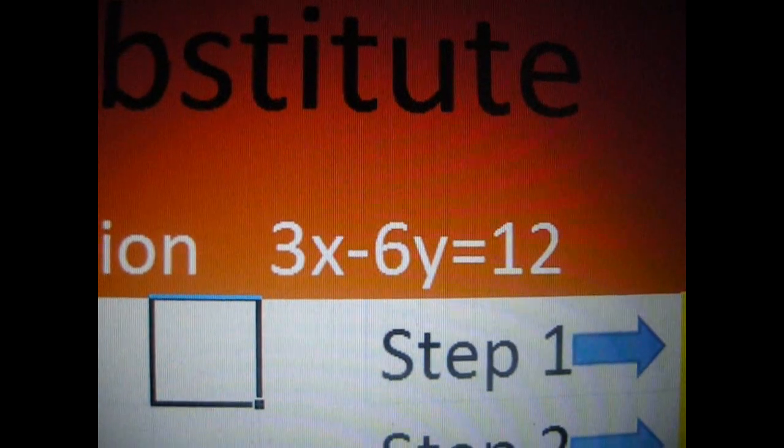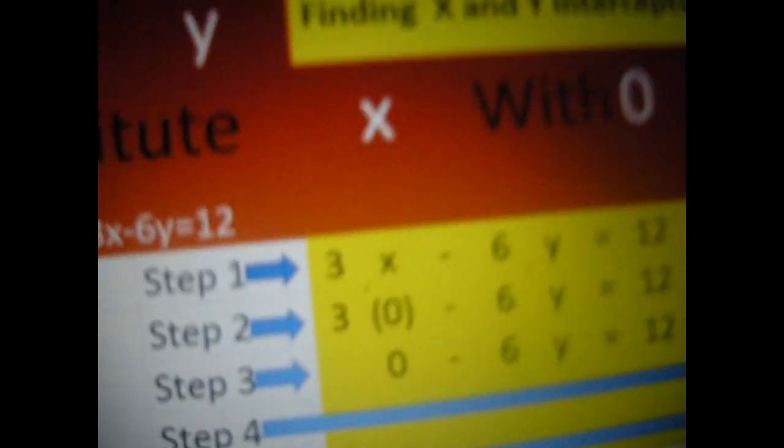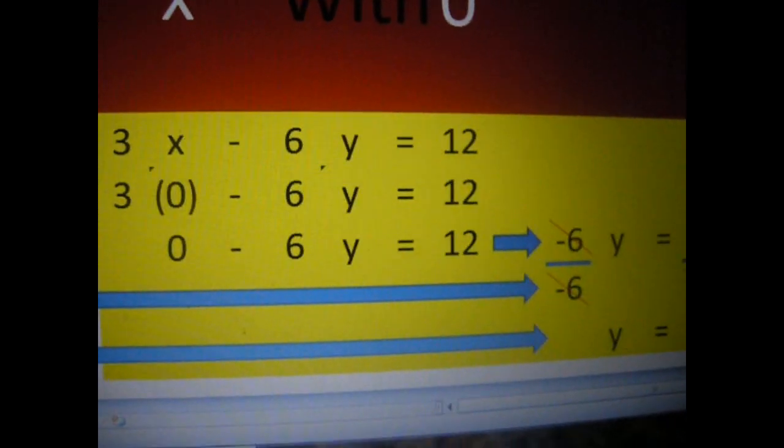The following is 3X minus 6Y equals 12. And here as you can see, step 1, 2, 3, 4, 5. Go ahead and break it down for you.